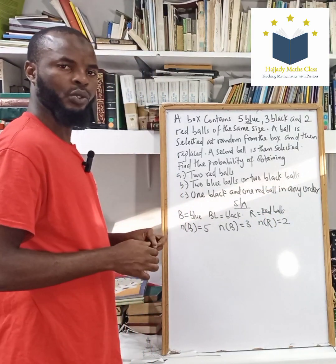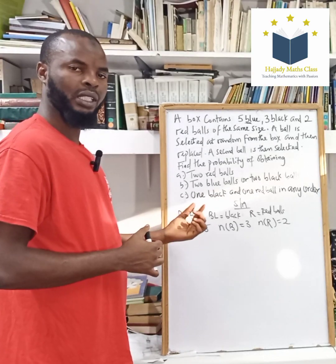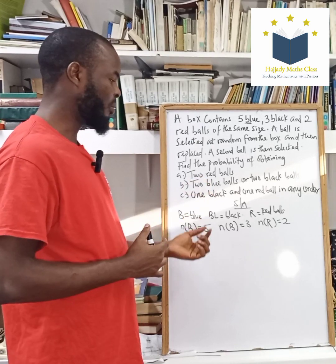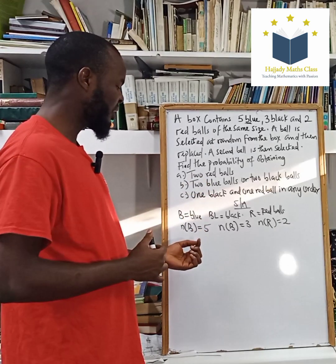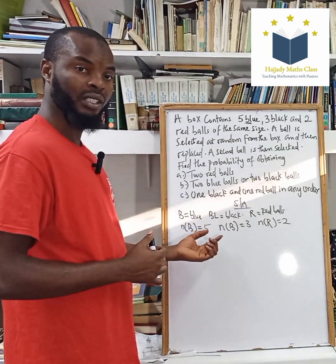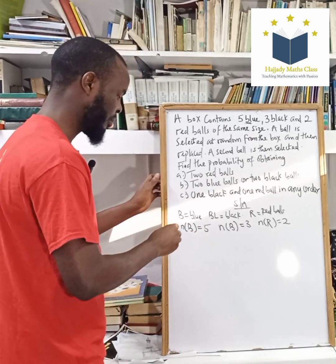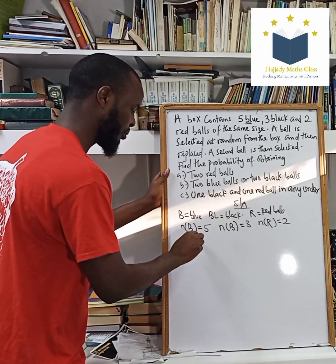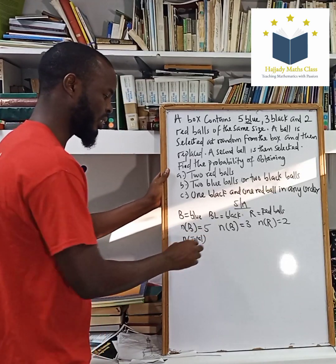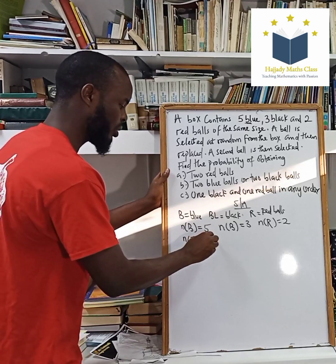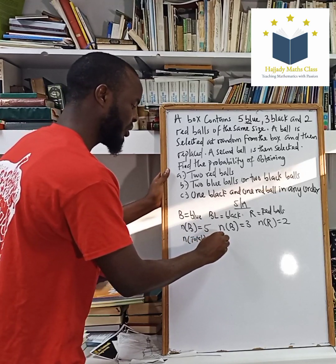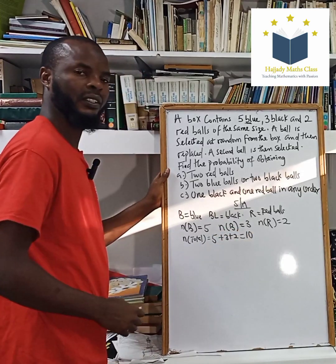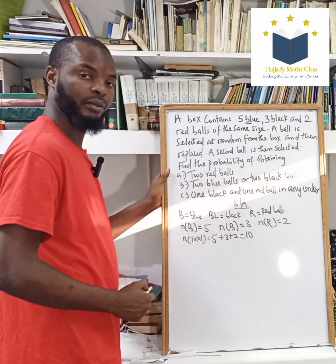In the last episode, the difference between that and this is that in that episode we had the total number of balls given to us. But in this experiment, we don't have the total number of balls. However, we can calculate it. Our total sample space, which is the total number of balls, is five plus three plus two, which gives us ten. So ten is our sample space.